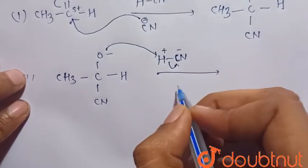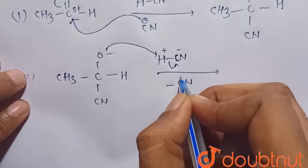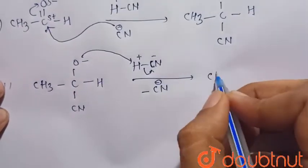So there is the formation of - CN- will leave - so there is the formation of the cyanohydrin, that is CH3COHCN.